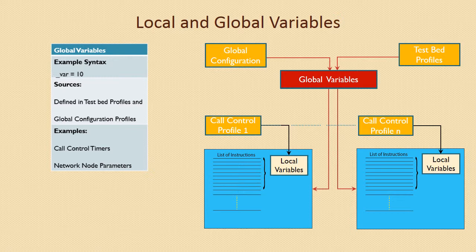Sources to define global variables are testbed setup and global configuration profiles. The variables defined in testbed cannot be altered once the setup is started. However, the variables defined in global configurations allow altering parameters even during the test run without requiring to stop the testbed. Only the parameters that need to be changed frequently, such as timers, are defined in global profiles.